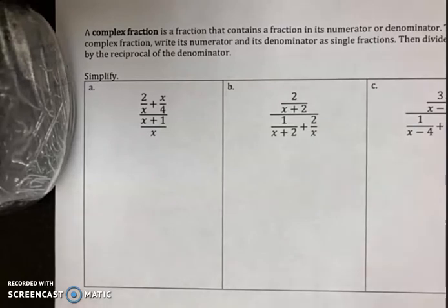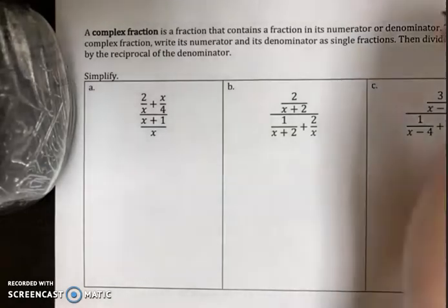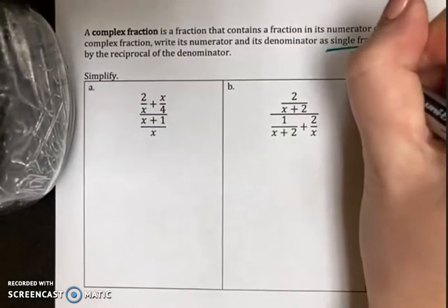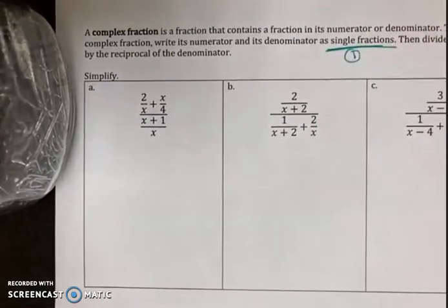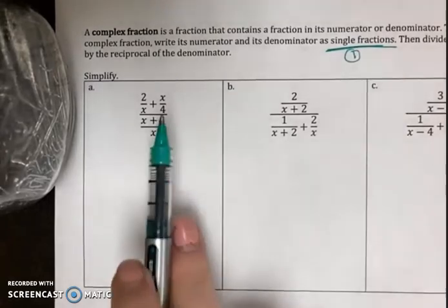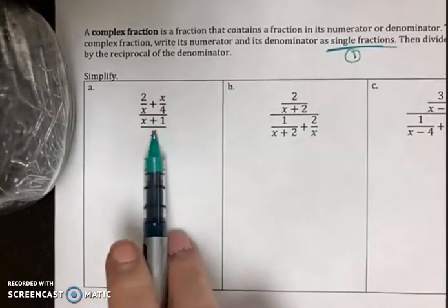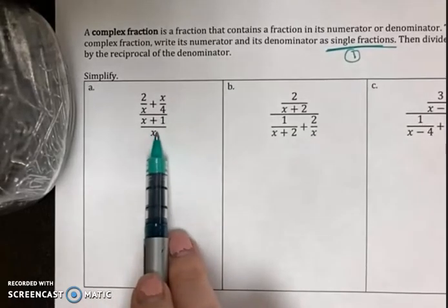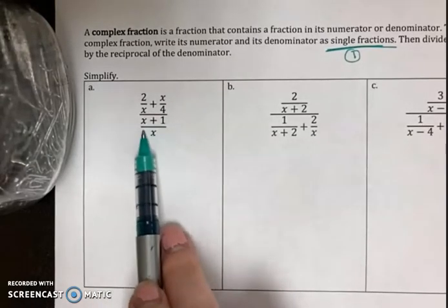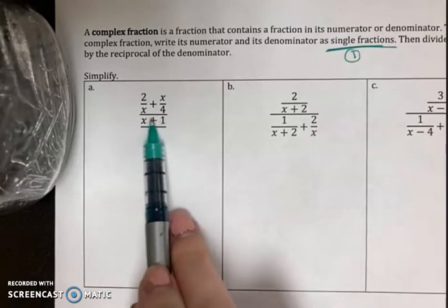So the first thing I'm going to do is make it a single fraction. So right where it says single fractions, that's step one. In order to do that, I'm going to have to add or subtract. The denominator here is already a single fraction. See how it's x plus 1 over x? That's one fraction.